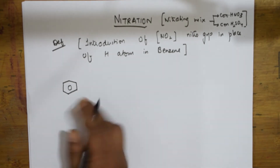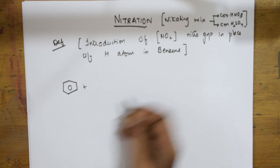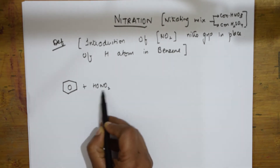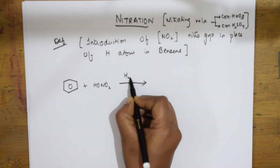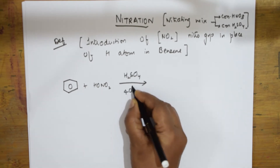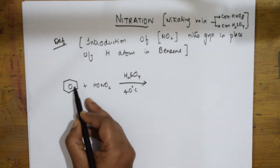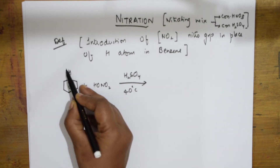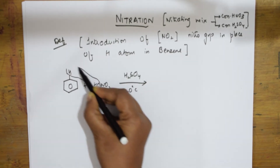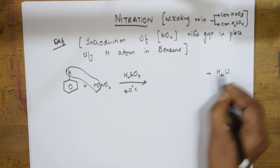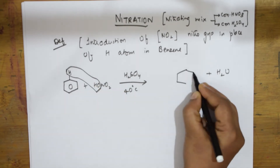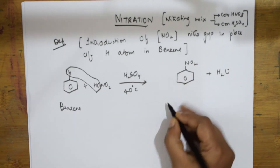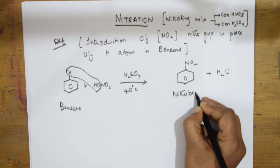We are going to take benzene, and along with that I am going to add two things: nitric acid - HNO₃, which can also be written as HONO₂ - and this is treated in the presence of sulfuric acid at a temperature of 40 degrees centigrade. When we take benzene, hydrogen is there (C₆H₆). This hydrogen and the OH come out as water, and NO₂ goes and attacks benzene, forming nitrobenzene.